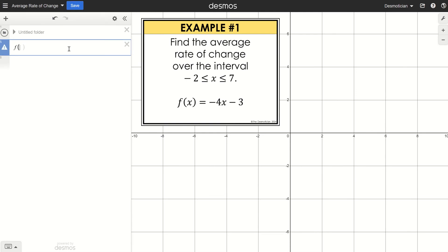You're going to start by typing in the function as it's written using function notation. To find the average rate of change, we're going to use the slope formula, so we need to know the value of the function at -2 and the value of the function at 7. These are both the endpoints for our interval.